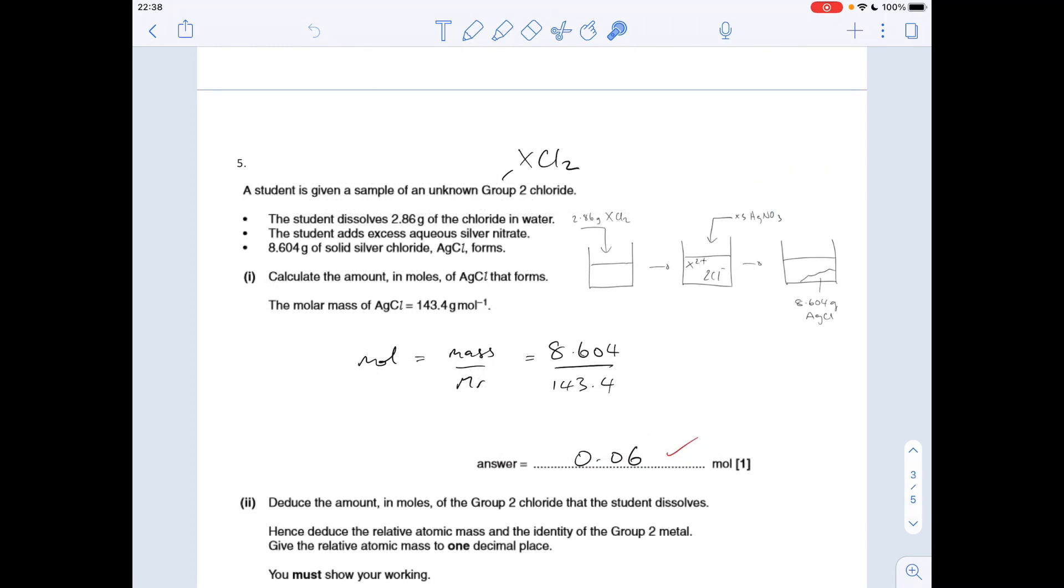We've got a potentially tricky calculation in question five. Students given a sample of an unknown group 2 chloride, the generic formula for that would be XCl₂. I always like to make these little diagrams just to try and visualize what's happening. They've added 2.86 grams of the group 2 chloride, dissolved it in water, added an excess of silver nitrate solution and it's produced that white precipitate of silver chloride and we know the mass of that is 8.604 grams. Nice easy start to the question: calculate the moles of silver chloride that's formed, so mass over Mr and they give you the Mr: 0.06.